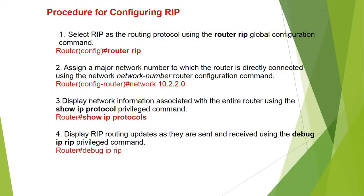To configure RIP: select RIP as the routing protocol using the 'router rip' global configuration command — Router(config)# router rip. Assign a major network number to which the router is directly connected using the 'network' router configuration command.